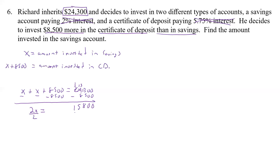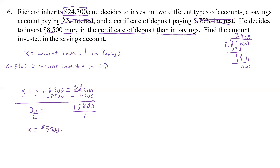So 2X equals 15,800, and we divide both sides by 2. 15,800 divided by 2 gives us 7,900. So X equals $7,900 invested in savings.